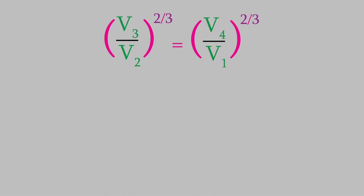Now, if we raise each side of the equation to the power of three halves, the exponents will drop out. So, we find out that V3 over V2 is equal to V4 over V1. Finally, we can multiply both sides of the equation by V1 over V3. If we do, we find out that we get a result of V1 over V2 equals V4 over V3.